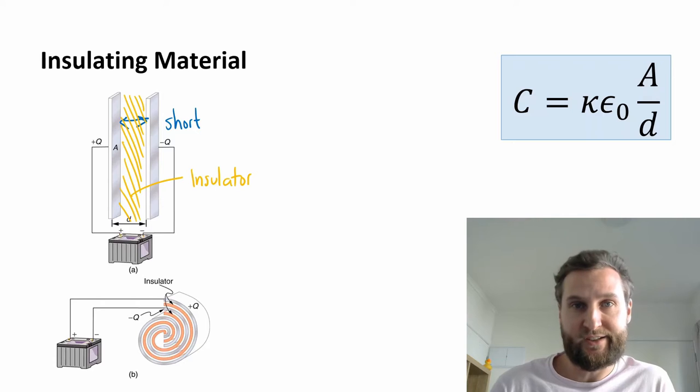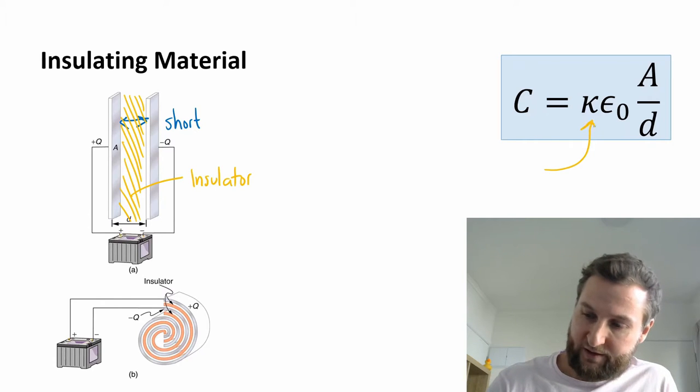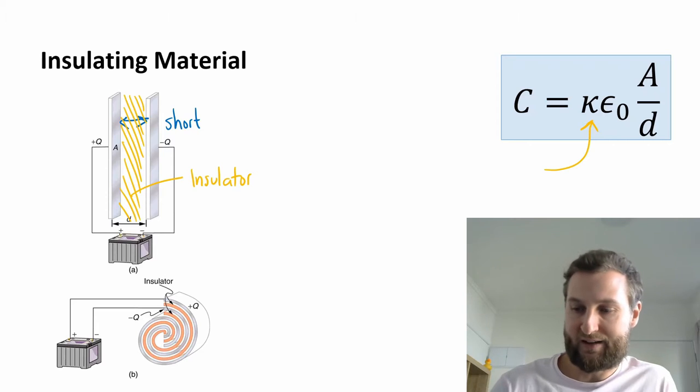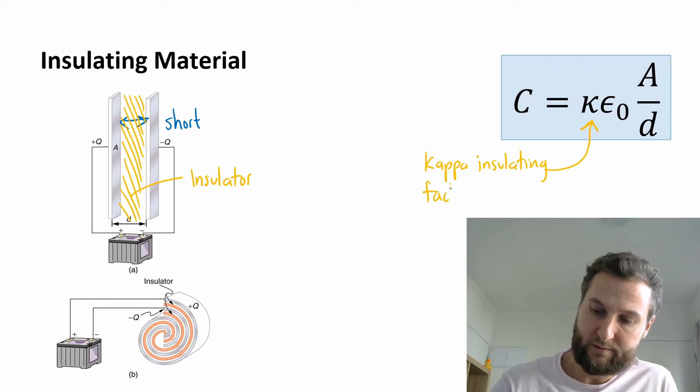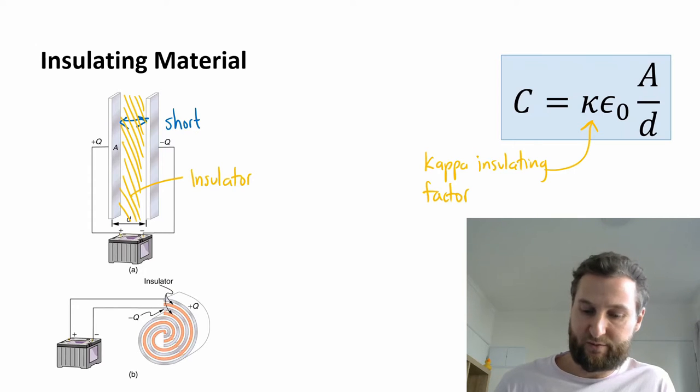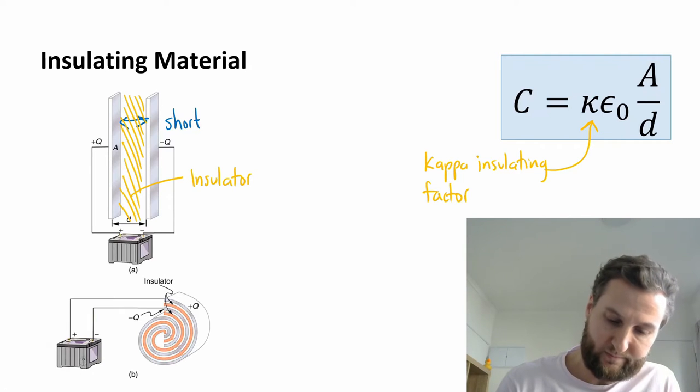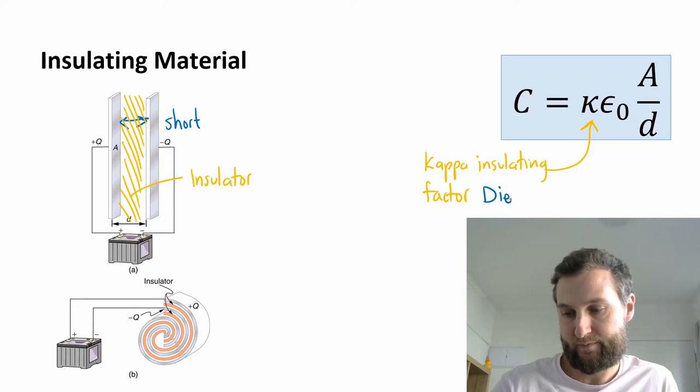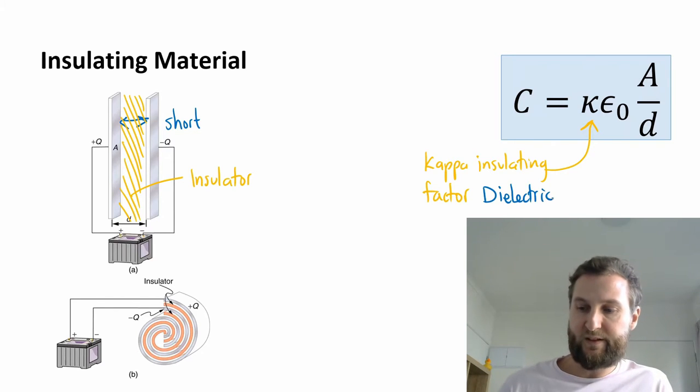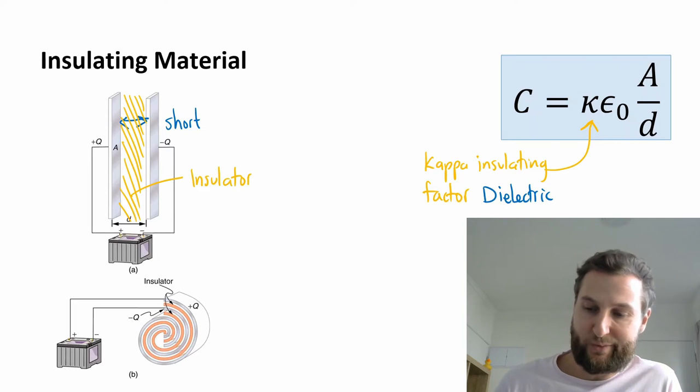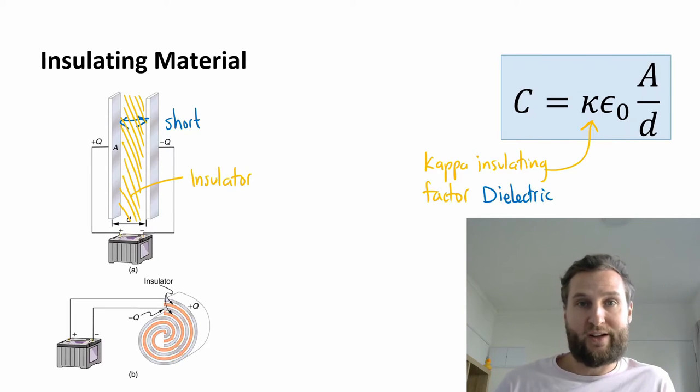Now this insulating factor is going to get slotted right into my equation for capacitance. This is going to be kappa, my insulating factor. We actually have a better name for this, what we call this is the dielectric. That dielectric prevents the charge from going from one side to the other, or creates a positive and negatively charged scenario there.